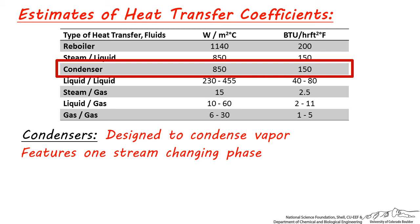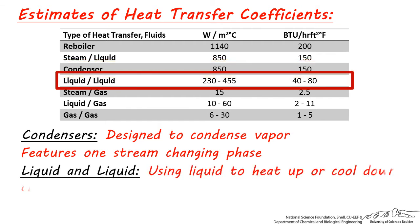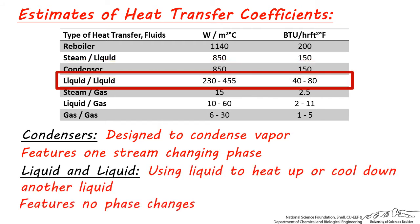We see a big drop between heat exchangers which feature latent or phase change heat transfer and simple heat transfer heat exchangers when we move to a liquid heating up or cooling down another liquid. Here no phase change is occurring — the heat transfer is simple conductive and convective. The range for coefficients is larger because the heat transfer is dependent on the velocity and type of fluids.